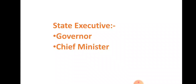The Governor also appoints the Chief Minister, and without the Governor's assent no bill can become law. The Governor has legislative, judicial, and discretionary powers.